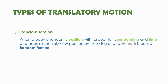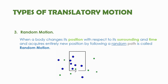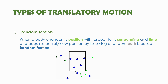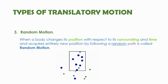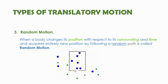The third type of translatory motion is random motion, where the body changes its position by following a random path — its direction is not specific. Examples include flying insects and the motion of gas molecules. Molecules inside a container continuously change position in different directions without following a specific path, which is named random motion.